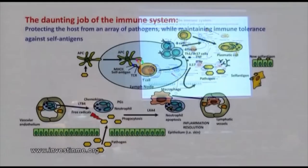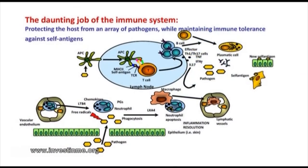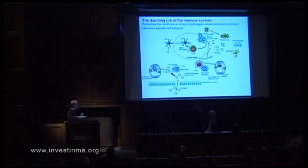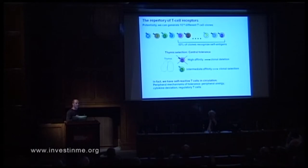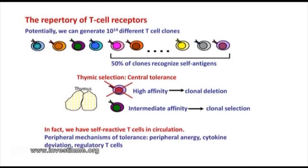But in some conditions, part of the pathogen resembles self-antigens. In that case, the immune system cannot distinguish between the pathogen and our own cells. In other conditions, after chronic inflammation, new antigens appear after tissue distortion — the concept of neo-self-antigens. The problem is that the immune system will recognize the pathogen and the self-antigen equally.